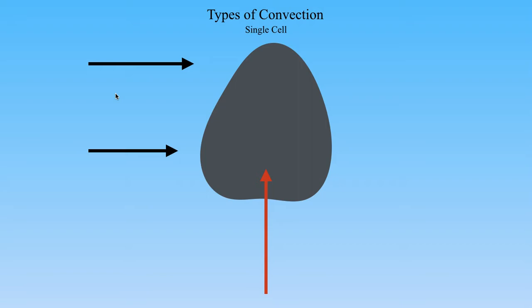The first type is the single cell thunderstorm, also referred to as an ordinary thunderstorm. These typically occur in a barotropic environment — one that has very weak to no vertical wind shear. As a consequence, when the thunderstorm goes up (the red arrow representing the updraft forms the cloud and precipitation), the precipitation forms directly over the updraft. Since that air is full of cold air and liquid water, it's much more dense than the updraft, so it falls onto the updraft and chokes it off.